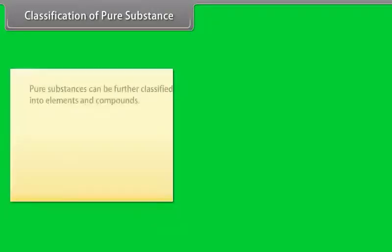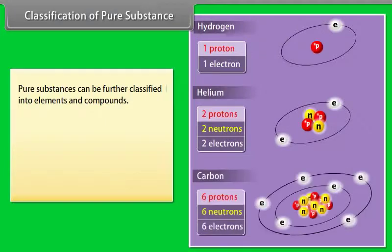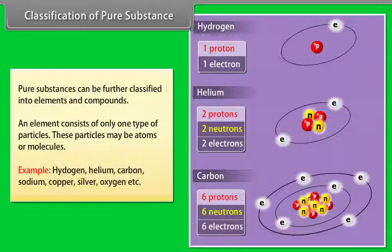Pure Substances can be further classified into elements and compounds. An element consists of only one type of particles. These particles may be atoms or molecules. Examples: Hydrogen, Helium, Carbon, Sodium, Copper, Silver, Oxygen etc.